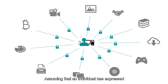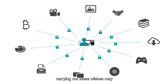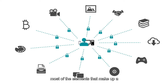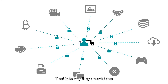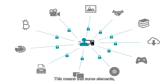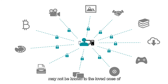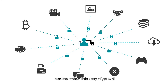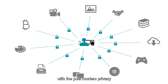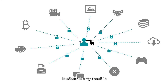Even assuming an individual has expressed their wishes comprehensively, carrying out those wishes may be complex or even impossible. Most elements of a person's digital life are dematerialized — they do not have a tangible presence or defined location in the world. This means some elements, intentionally or not, may not be known to the individual's loved ones and may be overlooked. In some cases this may align with postmortem privacy intentions, but in others it may result in meaningful online identities, files, and data being lost forever.